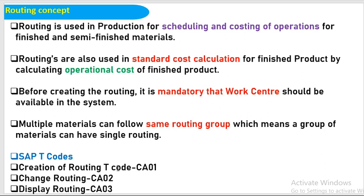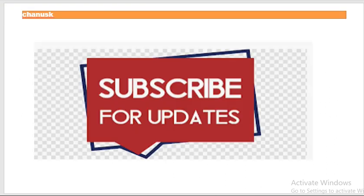These are the SAP T-Codes generally used for routing: CA01 to create routing, CA02 to change routing, and CA03 to display routing.